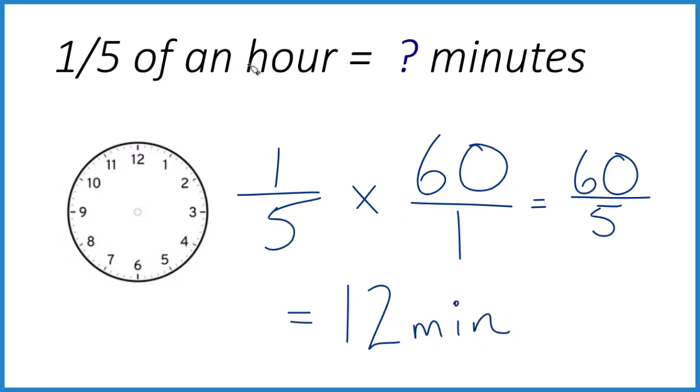So one-fifth of an hour equals 12 minutes. If you take 12 times 5, you'll get your 60. So we could divide this up here like this, and that would be one-fifth of an hour, 12 minutes.